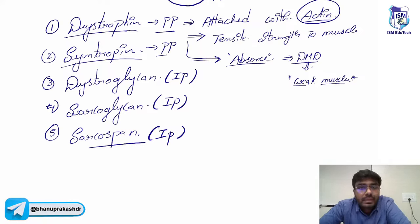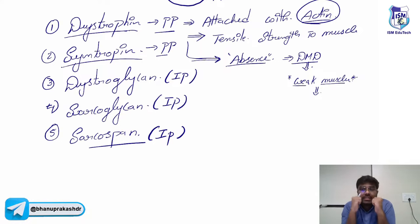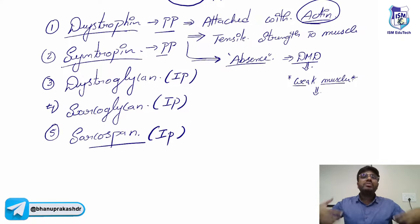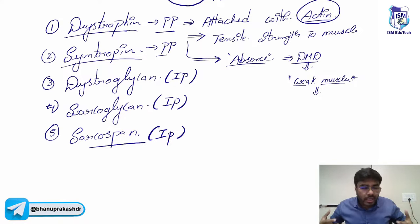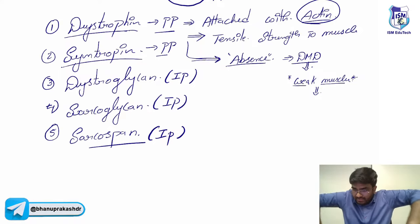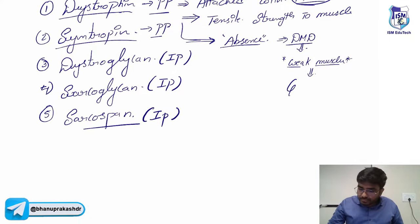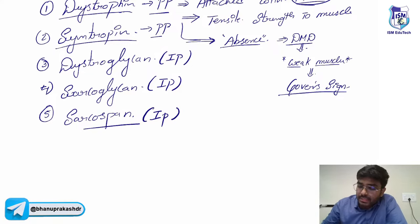In Duchenne Muscular Dystrophy, the muscles are going to be weak. When you ask a baby with DMD to stand up from a squatting position — they have weak muscles in the thighs and legs — they cannot simply stand. So they will use their upper extremities, taking ground support to stand. This is called Gower's sign.